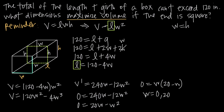We can't have w = 0 because if the width of the box were 0, the box wouldn't exist. So the width has to be 20. Now w = 20 represents a potential critical point of the function — a point where the function changes from increasing to decreasing or vice versa. Because we've only found one critical point, this is probably the value that maximizes volume, but we need to prove it.